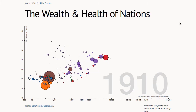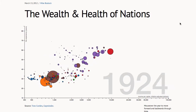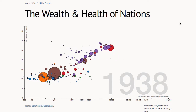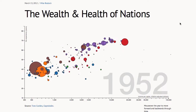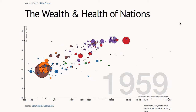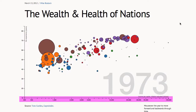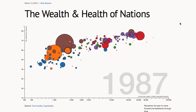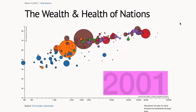Each circle is a nation — its size and position tell us the metadata, and the animation represents time. Let's take a look at the five dimensions it shows: life expectancy, income per capita, population, geographic region, and time.